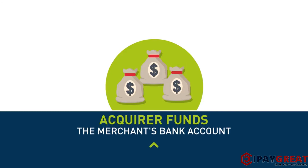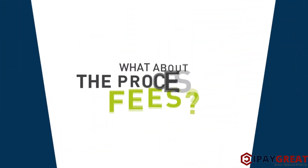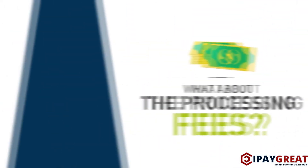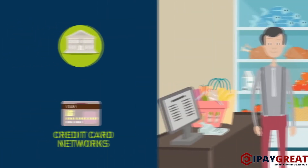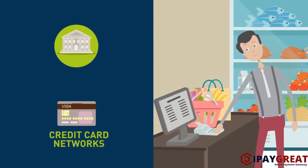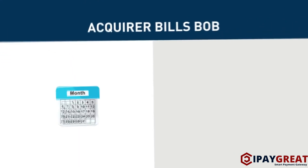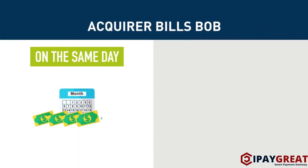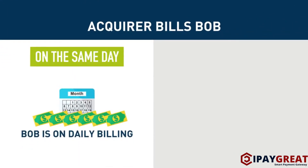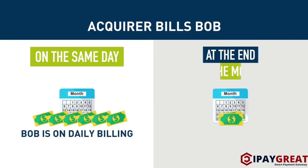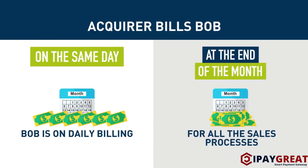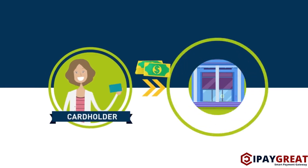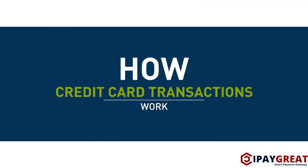Next, the acquirer funds the merchant's bank account. Now, what about the processing fees? The credit card networks bill the acquirer interchange fees for all of Bob's sales once the batch is settled. The acquirer then bills Bob either on the same day — sales minus fees — if Bob is on daily billing, or the acquirer bills Bob at the end of the month for all the sales processed in that month. The cardholder gets billed by its issuing bank. And that's how credit card transactions work.